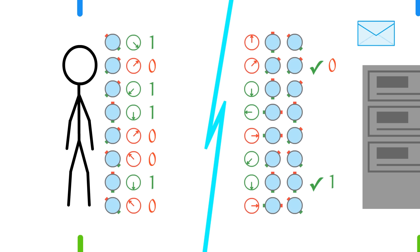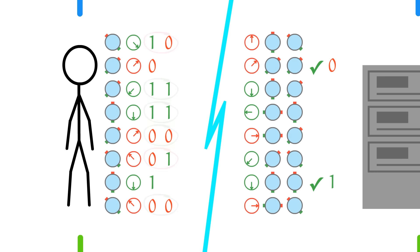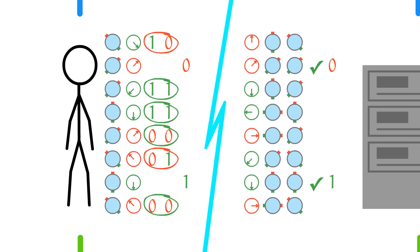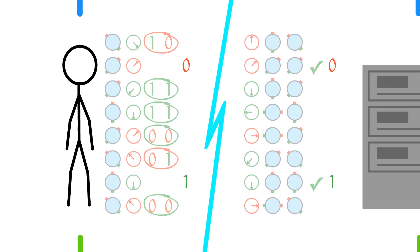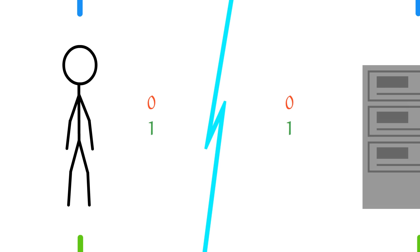But instead of throwing the rest of them away, you can use the mismatches to check for an eavesdropper. You know there was an eavesdropper if something called Bell's inequality was satisfied. If Bell's inequality is not satisfied, it means there was no eavesdropping, and the key is safe to use.